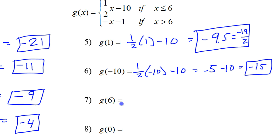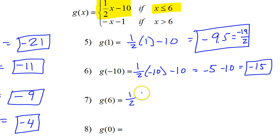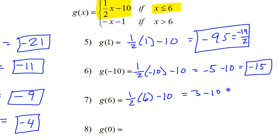Number 7: x equals 6. Is 6 less than or equal to 6? Yes, because of the 'equal to' part — 6 equals 6. So again we're doing the top function: one half of 6 minus 10. Half of 6 is 3, so that's 3 minus 10, which is negative 7.